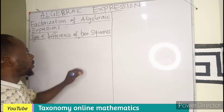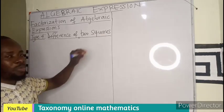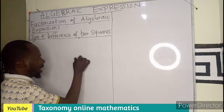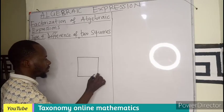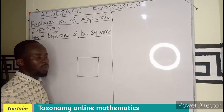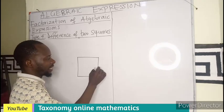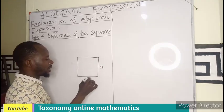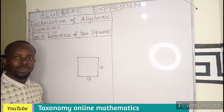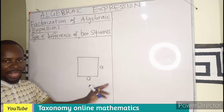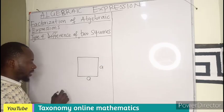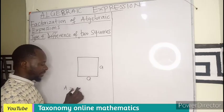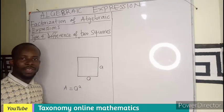If we want to employ the principle of a square — we know a square has all the sides being equal. So if I have a square of side A, meaning all the sides are going to be A. So if I'm looking for the area of this square, the area is just going to be A times A, that will be A squared.